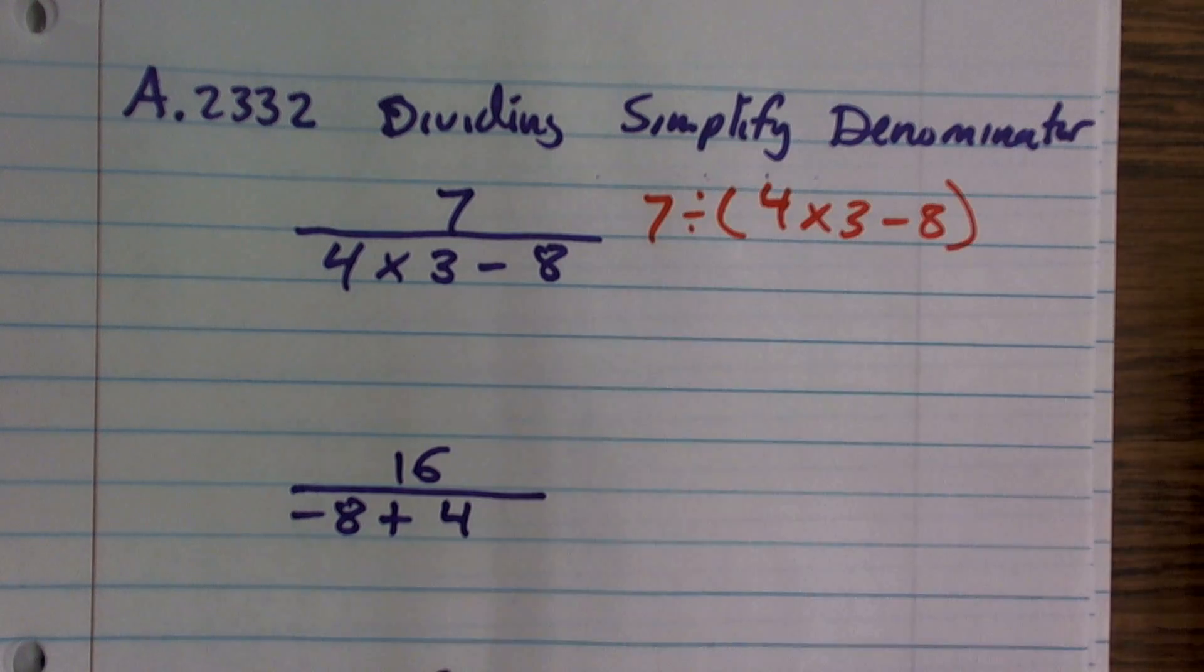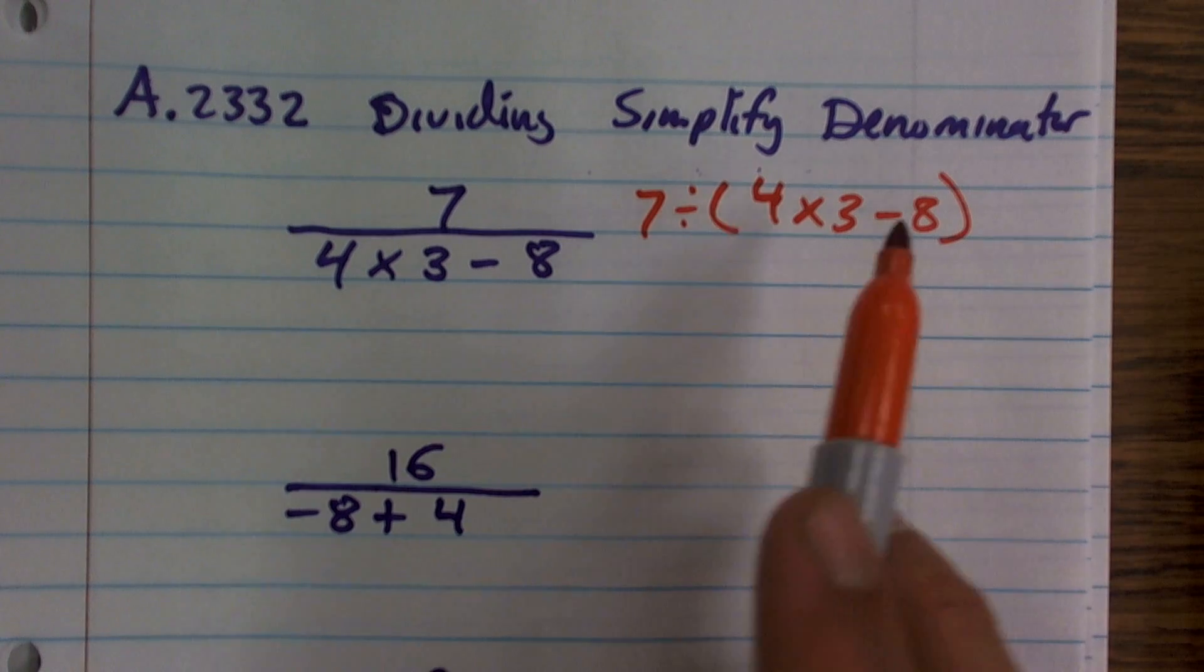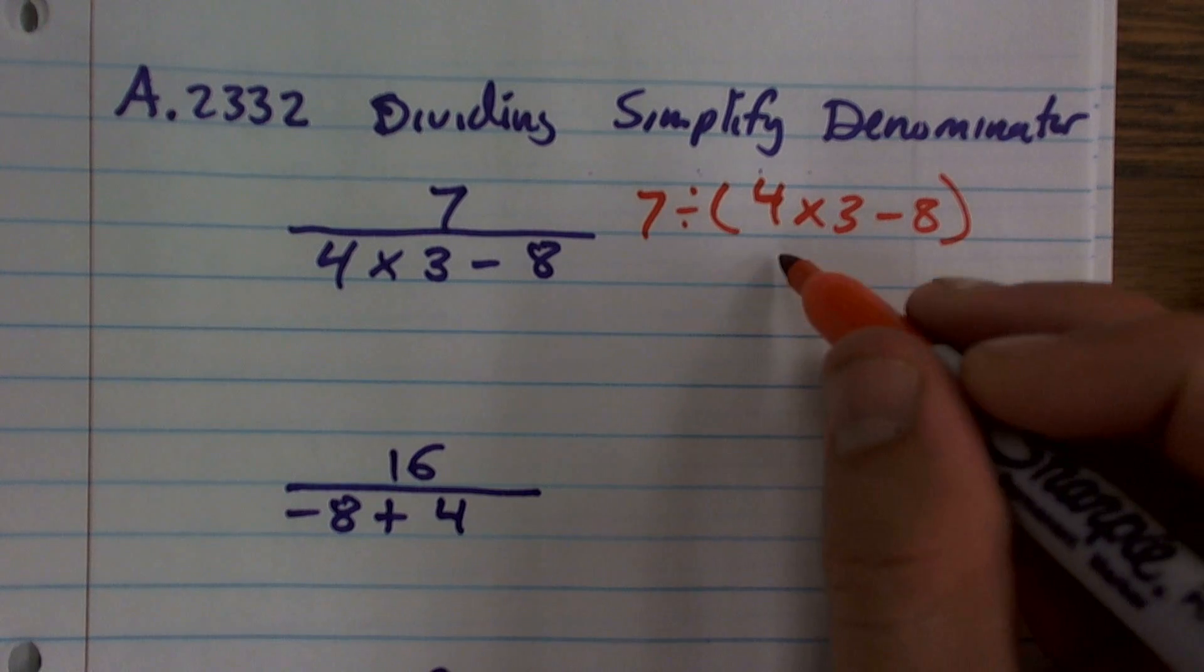So since I need to group them all together, I am going to use parentheses. So now, if I was going to use an order of operations for here, I notice I have parentheses. So I have to use my operations in my parentheses first. 4 times 3 is 12.